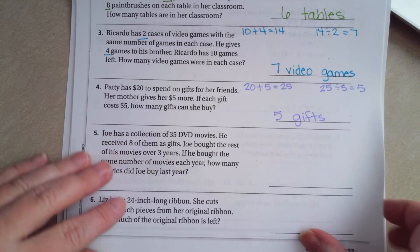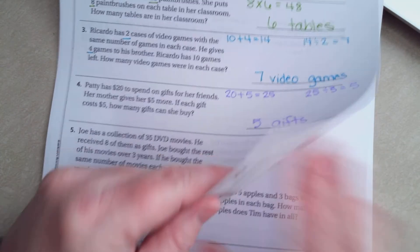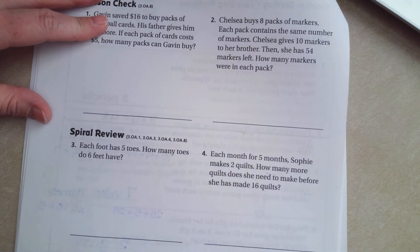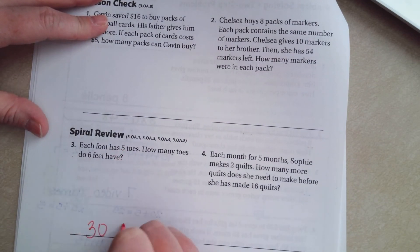We're going to go on to the back where you're going to do the lesson check just like always, and we're going to go down to this for our review. Each foot has five toes. How many toes do six feet have? So 6 times 5, that's 30 toes. Make sure that we are labeling.